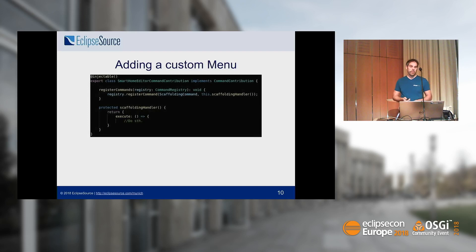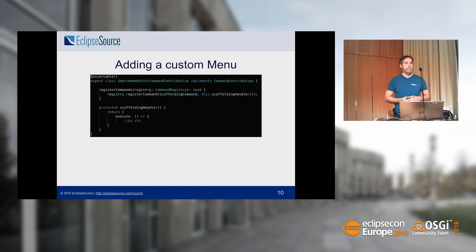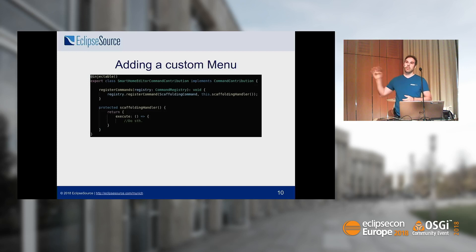The first thing we wanted to do is add a custom menu — because we wanted to place some actions in Theia. This is simple, and the major reason I show it is so you get a brief idea of how coding and extensions work in Theia. This would be the code to register a new command — pretty much the same as you know from Eclipse IDE. It works with dependency injection: you get a command registry and register your new command with an ID and a handler. The handler implements the behavior you want to execute.